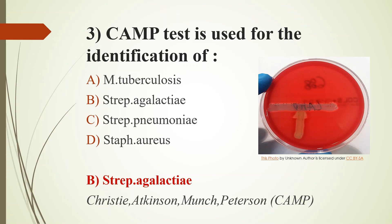Other options: For Mycobacterium tuberculosis, important points to remember are LJ medium and Mantoux test. For Streptococcus pneumoniae, key features include draughtsman/coin appearance, bile solubility test, and optochin sensitivity test. Staphylococcus aureus shows oil-paint appearance on nutrient agar, and mannitol salt agar is a selective medium for Staphylococcus aureus.